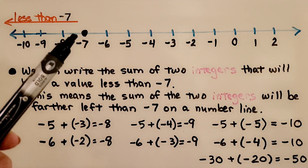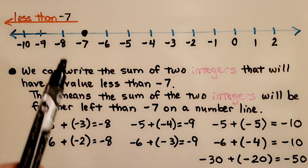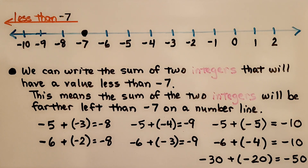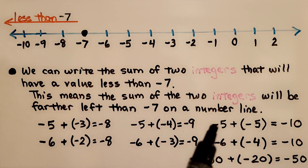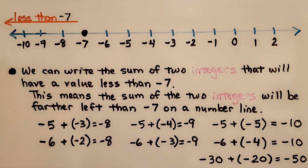Here's a number line with a point drawn on negative 7. The numbers to the left are less than negative 7, so we can write the sum of two integers that will have a value less than negative 7 — meaning the sum will be farther left than negative 7. For example: negative 5 plus negative 3 is negative 8; negative 5 plus negative 4 is negative 9; negative 5 plus negative 5 is negative 10. We could even do negative 30 plus negative 20, which is negative 50 — way over to the left, and less than negative 7.